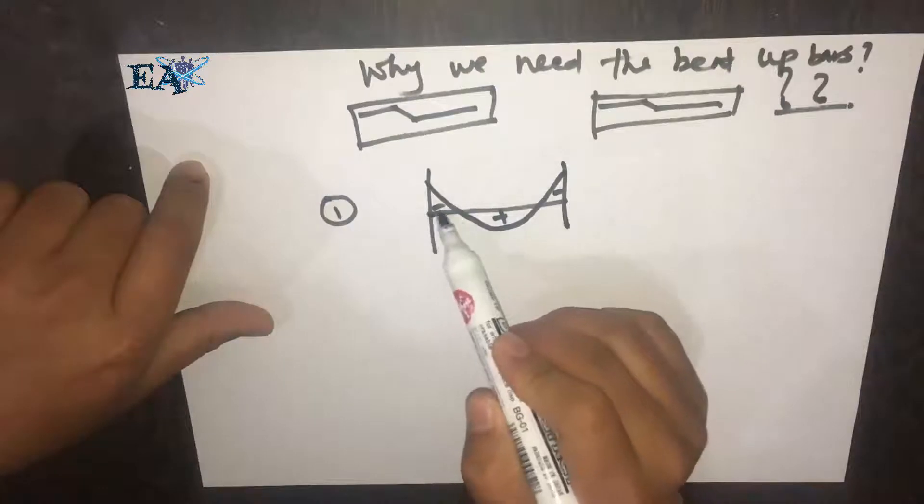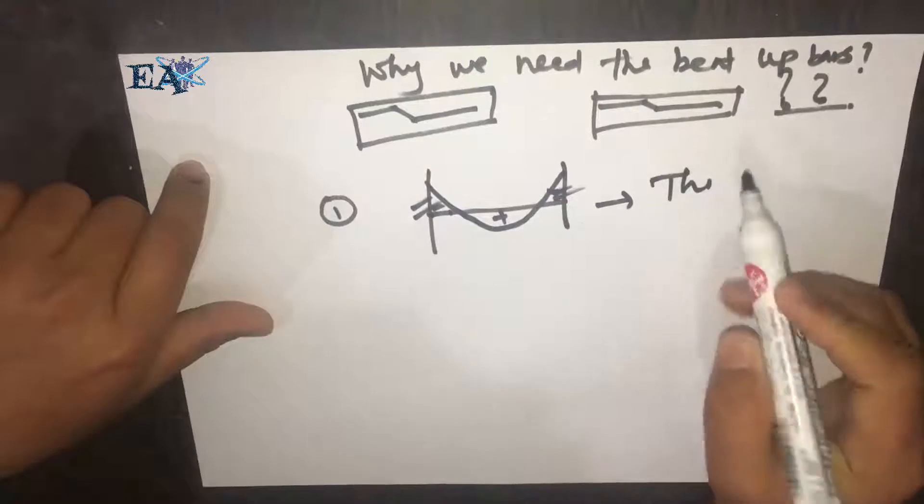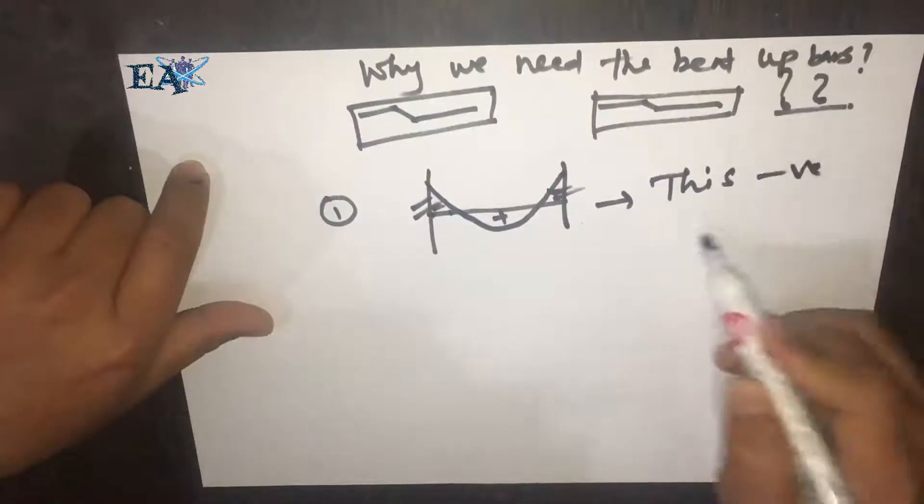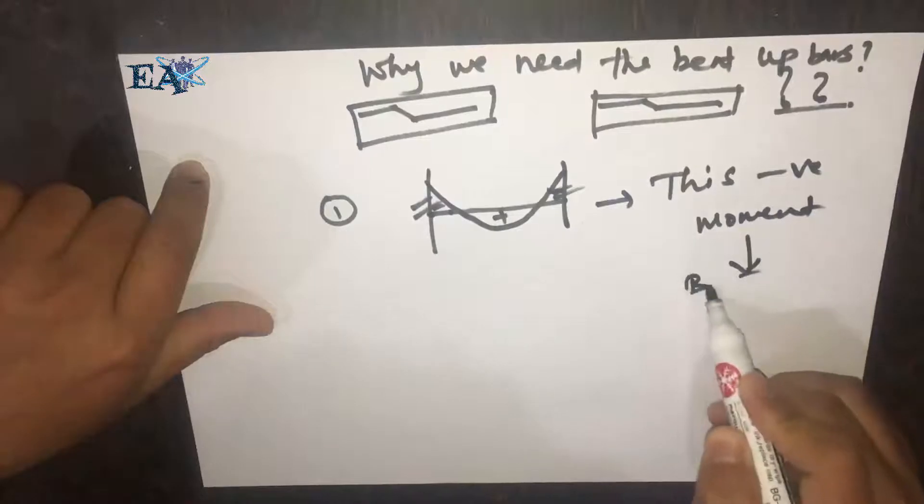So we see that at the support we have got negative moment. To counteract this negative moment, we need bent up bars.